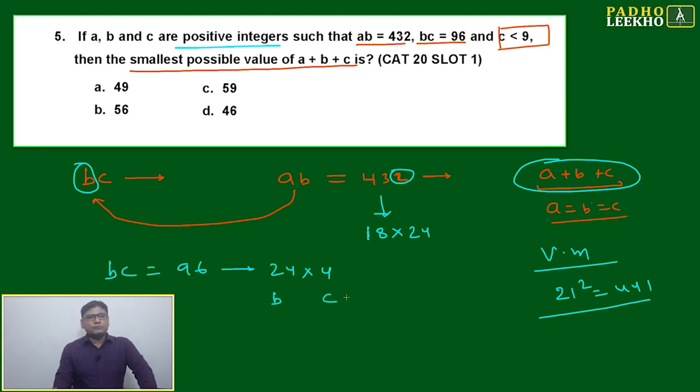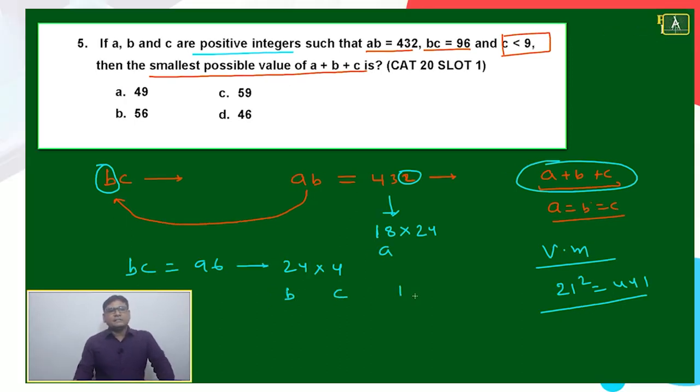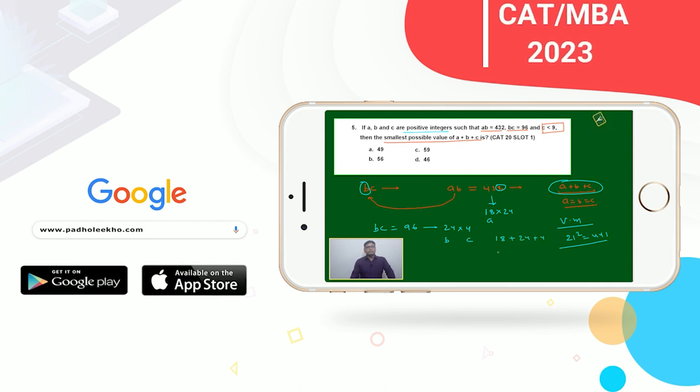So b equals 24, c equals 4, then a equals 18. Now we can just add: 18 plus 24 plus 4, how much will it become? 46, correct.